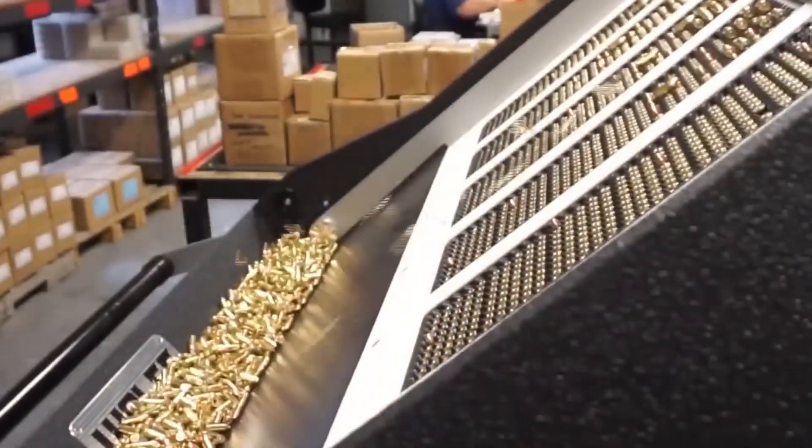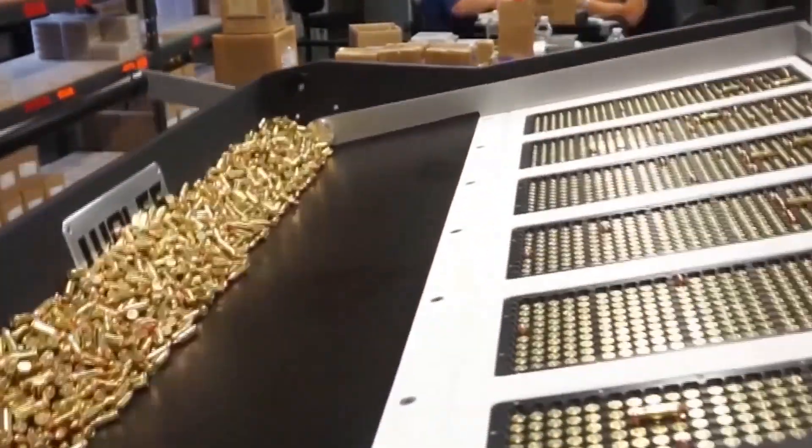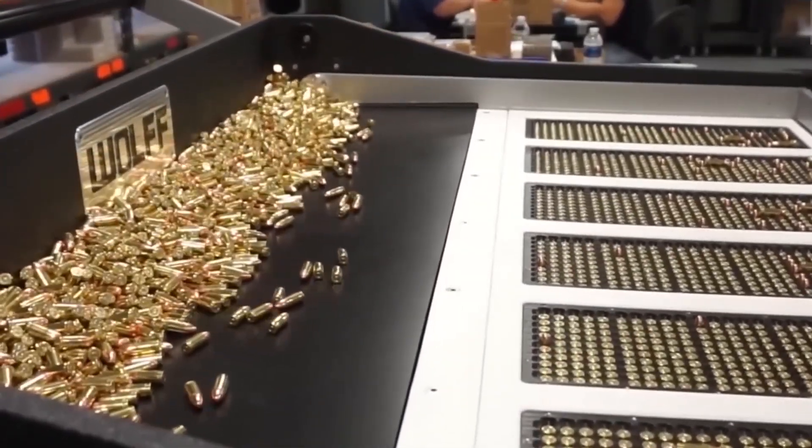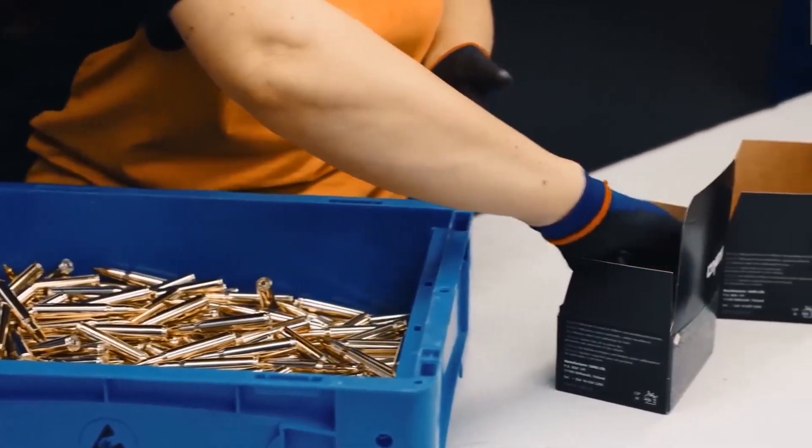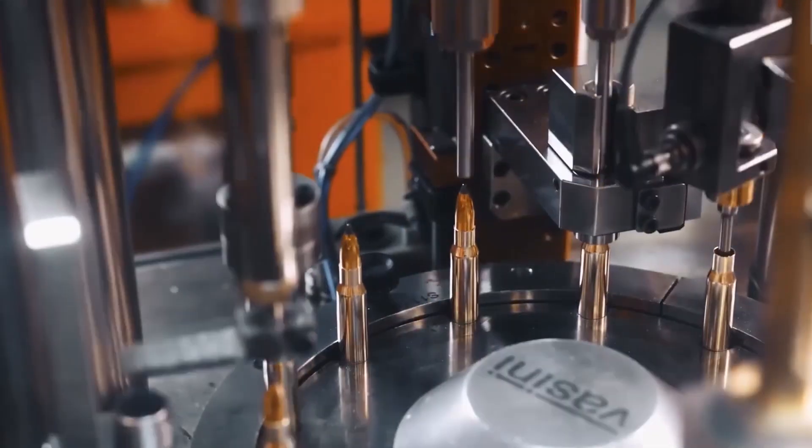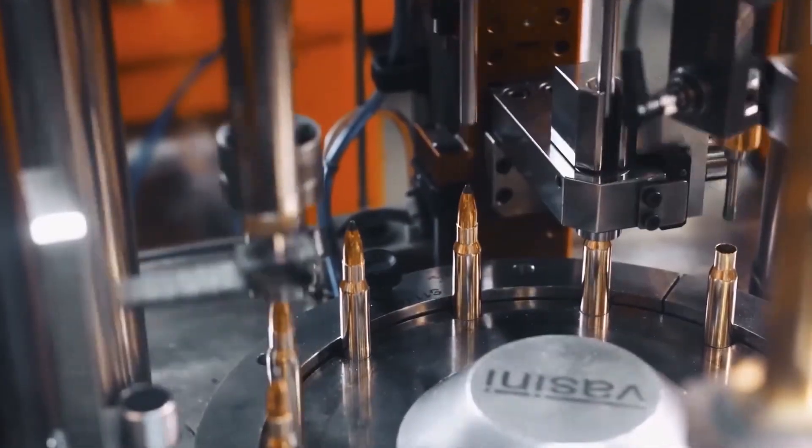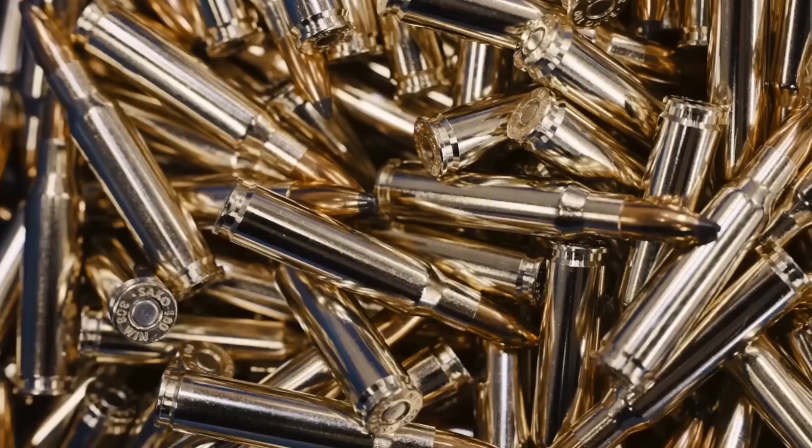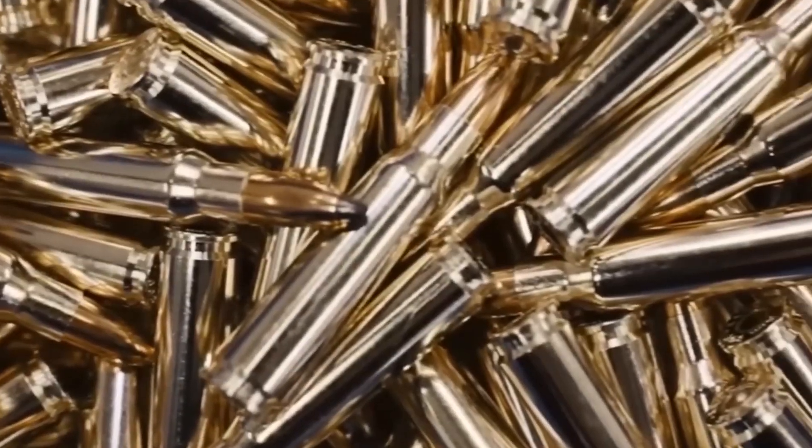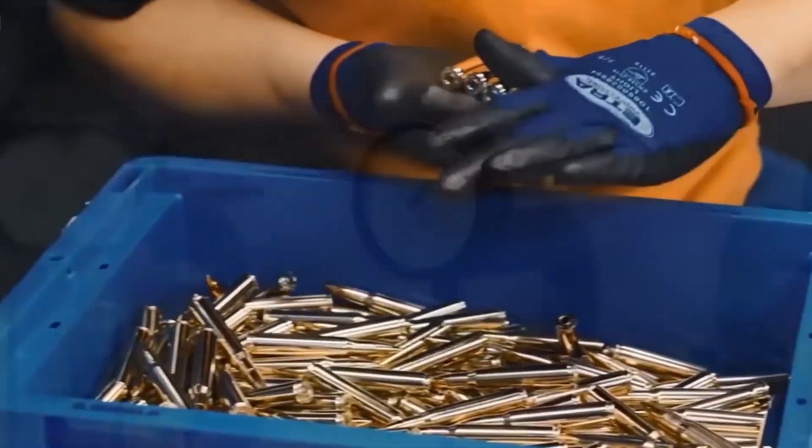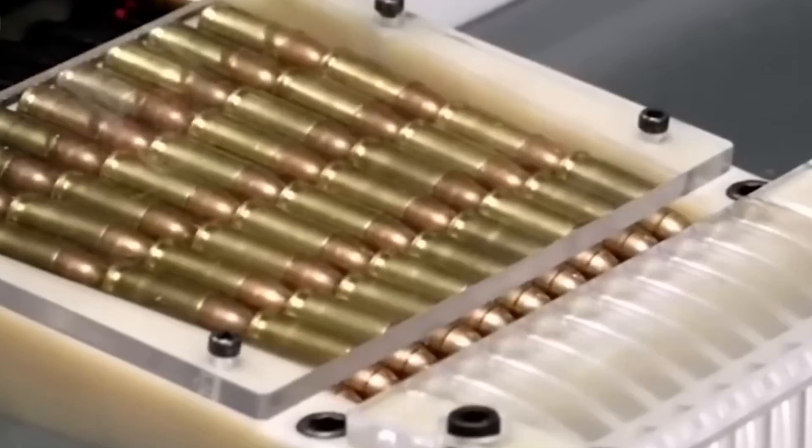Many manufacturers use automated vision systems that check each round for defects invisible to the human eye, such as small cracks in cases or improperly seated primers. Depending on the intended use, ammunition may undergo additional testing. Military and law enforcement contracts often require ballistic testing of sample rounds from each lot, measuring velocity, accuracy, and function in test firearms.